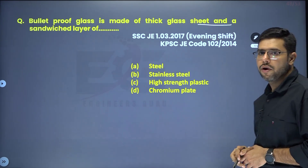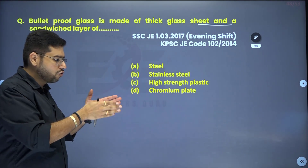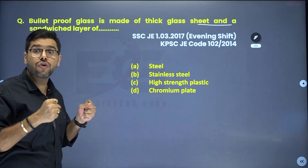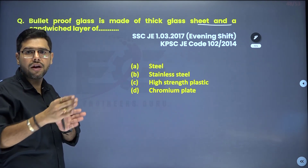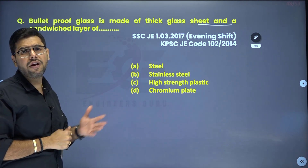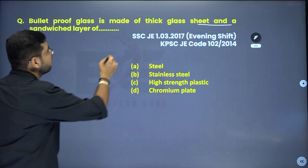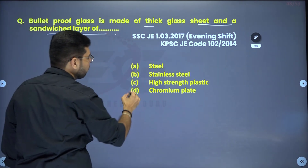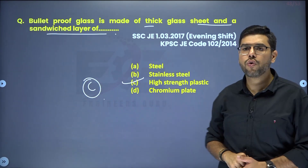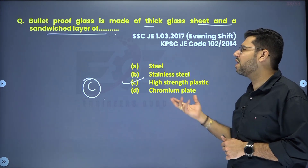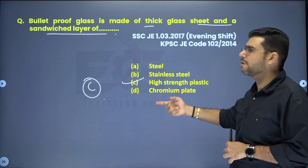Bulletproof glass — a bullet cannot pass through it. How is it made? There is a thick glass sheet, and between two glass sheets there are several layers of high-strength plastic sandwiched together. This leads to the formation of bulletproof glass. So it is made up of thick glass sheets and a sandwiched layer of high-strength plastic, which prevents bullets from passing through.